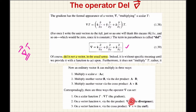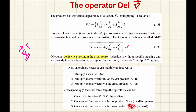The divergence is the dot product of the del vector operator with a vector function. The curl is the cross product of the del operator with a vector function — that is called the curl of the vector function.